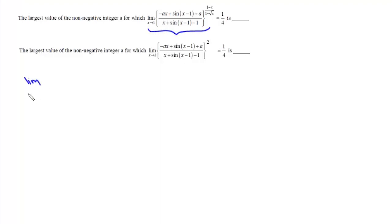We have to find this limit x tends to 1 of minus Ax plus sin(x minus 1) plus A divided by x plus sin(x minus 1) minus 1, all to the power (1 minus x) upon (1 minus root x), that is given equal to 1/4.